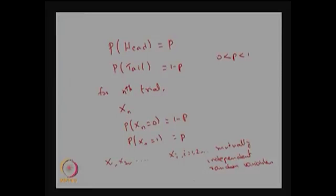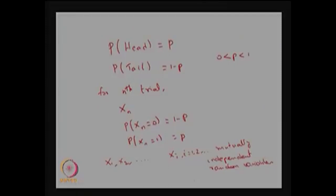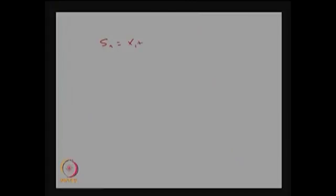So in this random experiment we toss a coin infinitely many times, and for any nth trial we define the random variable Xn taking value 0 with probability 1-P and value 1 with probability P, equivalent to appearing a head with probability P and a tail with probability 1-P. Now I define another random variable as the partial sum Sn, which is the sum of the first n random variables, so Sn gives the number of heads appearing in the first n trials.